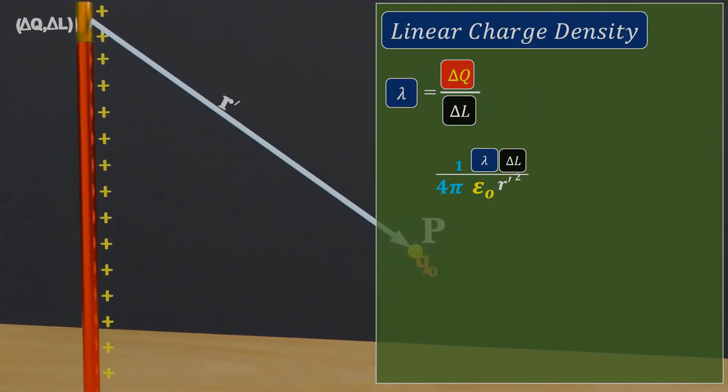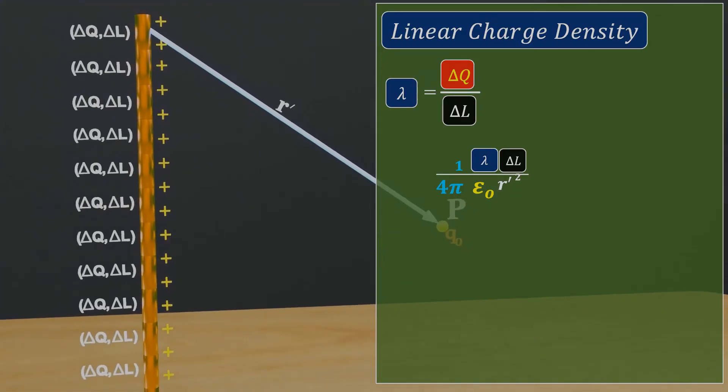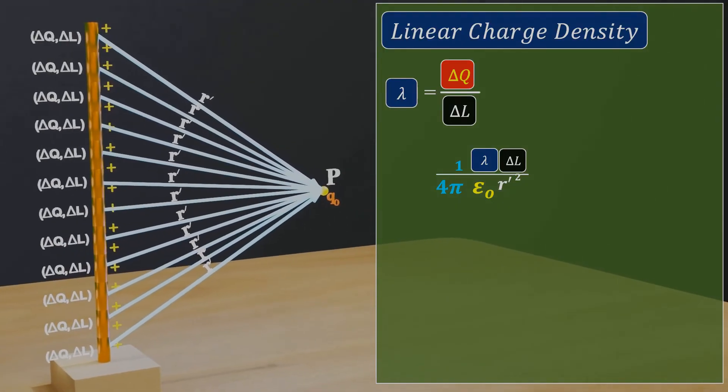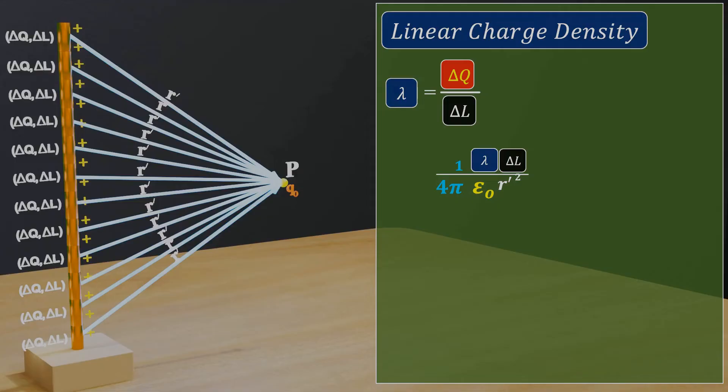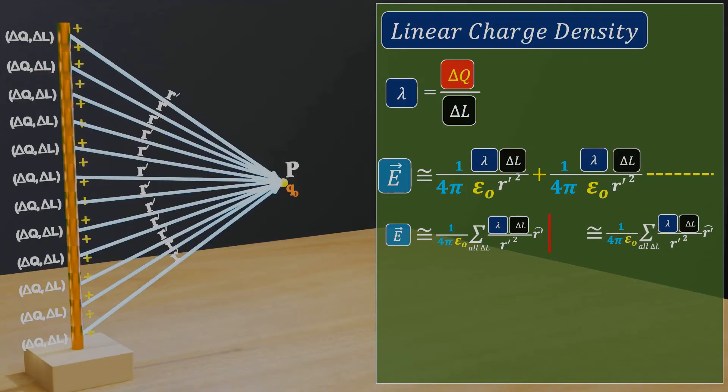In the same way, we can consider a number of possible del L elements on the wire. And by using vector sum and the principle of superposition, we can calculate the total electric field at point P due to all del Q charges. This can also be expressed in a simplified way, as electric field equals 1 upon 4 pi epsilon 0 summation all del L, lambda into del L divided by r prime square. Since electric field is a vector quantity, we need to multiply the equation with the unit vector r prime cap to specify the direction. As we saw in the last video, if we multiply the electric field equation with test charge q0, we get the equation for the total force acting on q0 at point P due to the electric field.